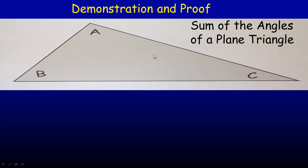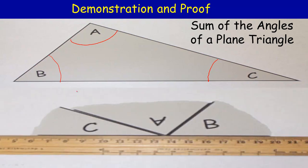A plane triangle just means a triangle drawn on a flat surface, as opposed to drawn on a sphere or a ball like the earth. Here's an example of a random triangle. If we were to cut or tear off all the angles — ripped here, ripped here — you can take the angles and arrange them so they form a straight line, or a straight angle, which is 180 degrees. So this is a demonstration that the three angles in this particular triangle add up to 180 degrees.